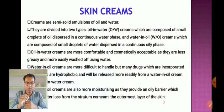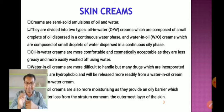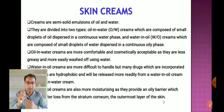Creams are semi-solid emulsions of oil and water, divided into two types: oil-in-water (O/W) and water-in-oil (W/O). Oil-in-water creams are composed of small droplets of oil dispersed in a continuous water phase, while water-in-oil creams are composed of small droplets of water dispersed in a continuous oily phase.